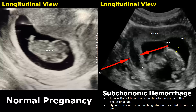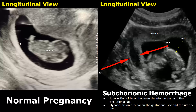This comparison is mainly based on abnormalities seen outside the gestational sac. In the left image, we can see a normal early pregnancy. The gestational sac is seen with a normal embryo. The boundaries of the gestational sac are smooth.